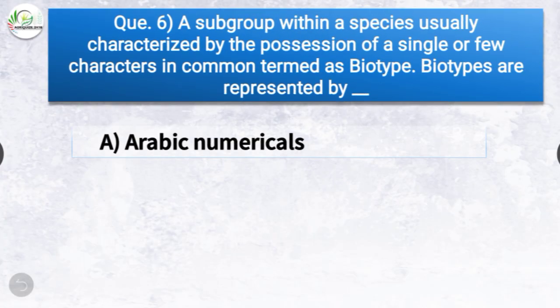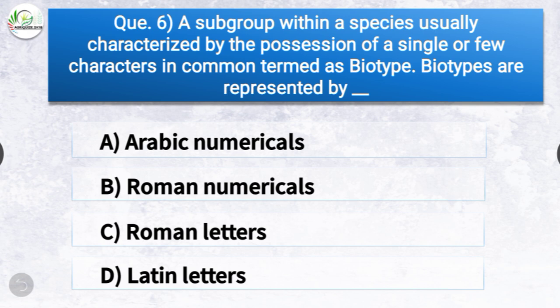Question number six: A subgroup within a species usually characterized by the possession of a single or few characters in common is termed as biotype. Biotypes are represented by dash. The options are Arabic numerals, Roman numerals, Roman letters, or Latin letters. The correct answer is option A, Arabic numerals. Biotypes are represented by Arabic numerals.